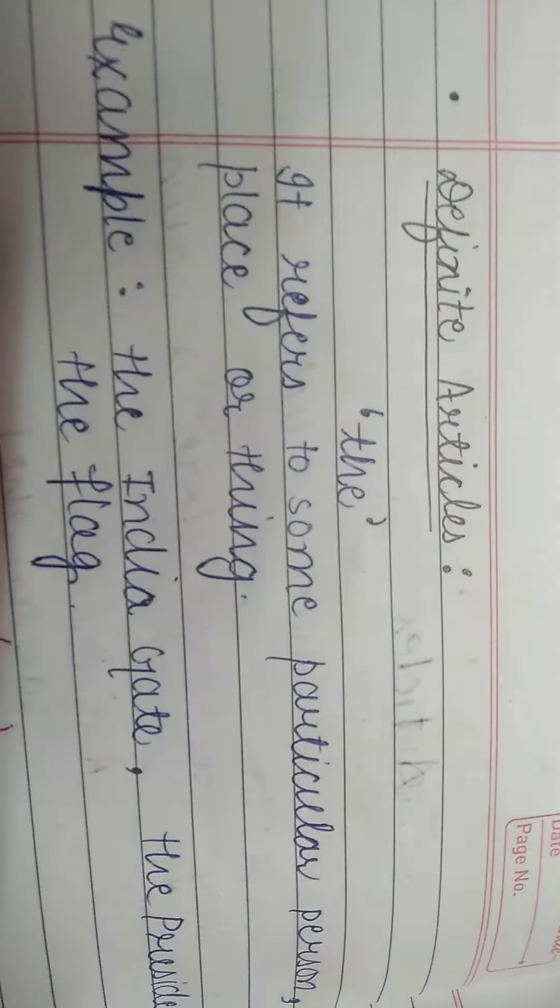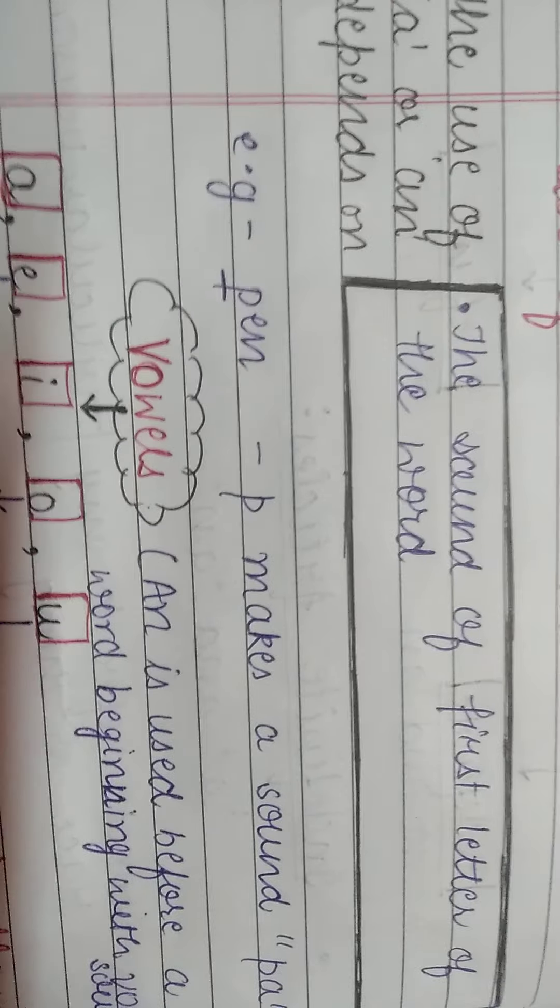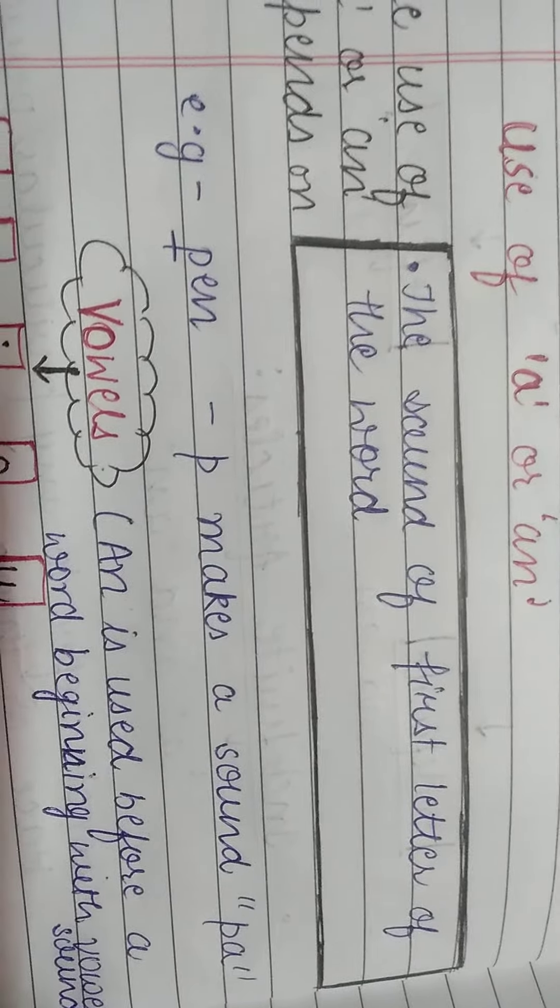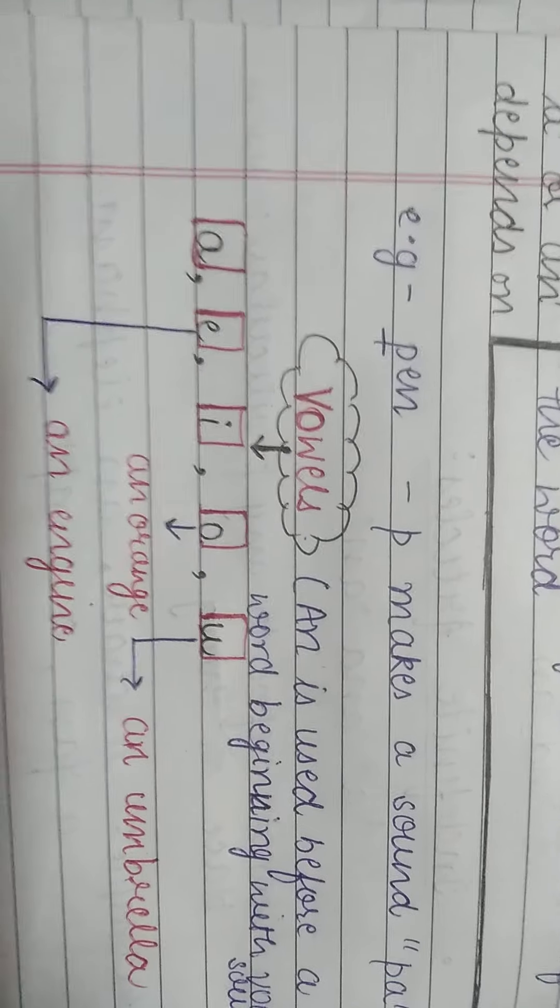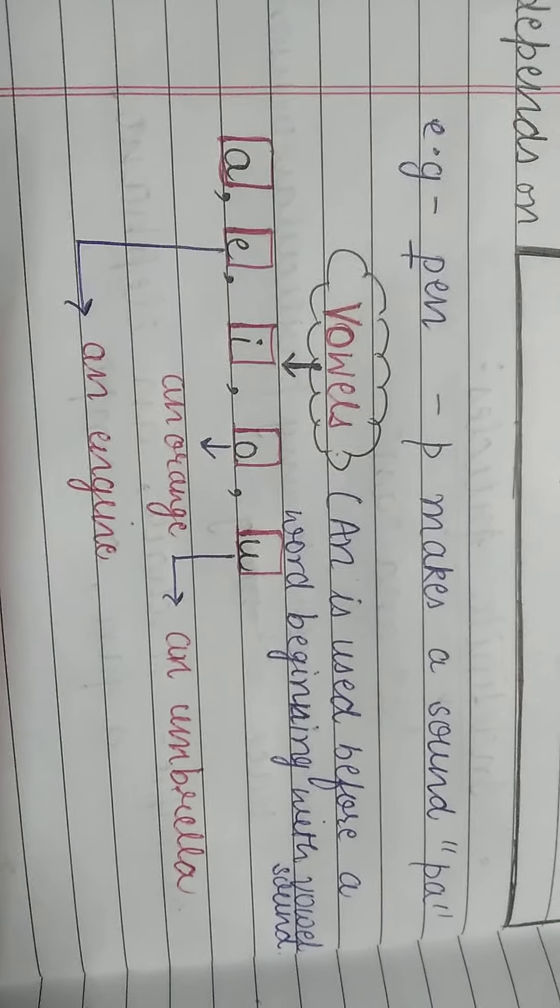Now we have uses of A and An. Now we will clear where we will put A and where we will put An. The use of A and An depends upon the sound of the first letter of the word. You have to see the sound. One example: a pen. What is the sound of P? Per. So we depend on this - which is the sound of a vowel and which is consonant. You have to know about that we have 26 alphabets.